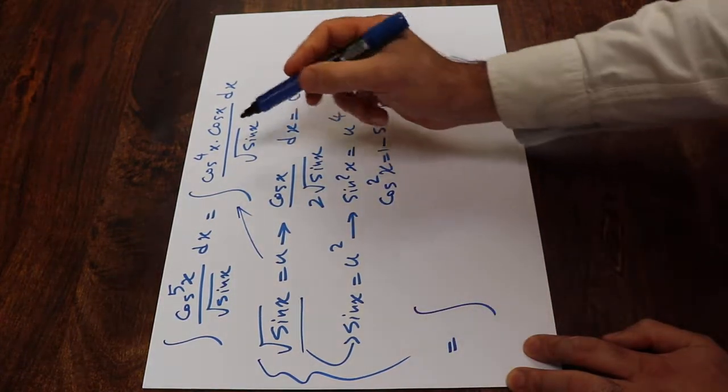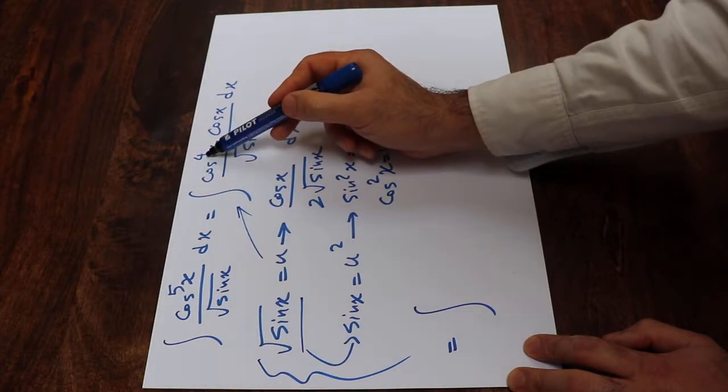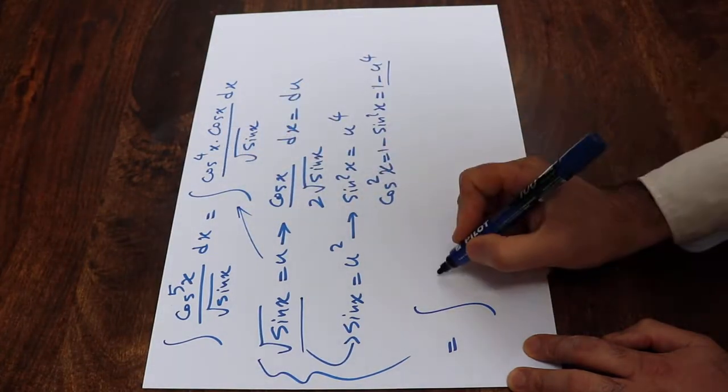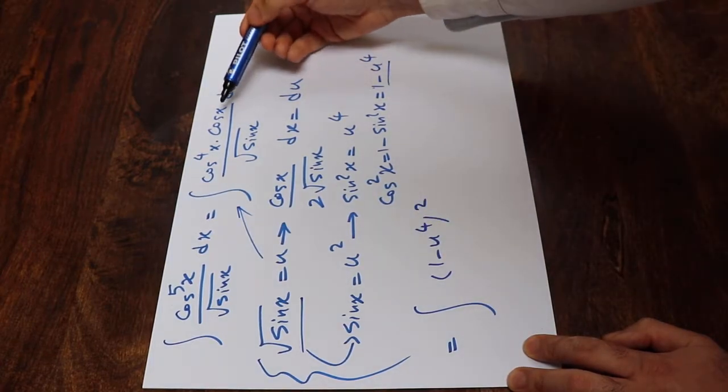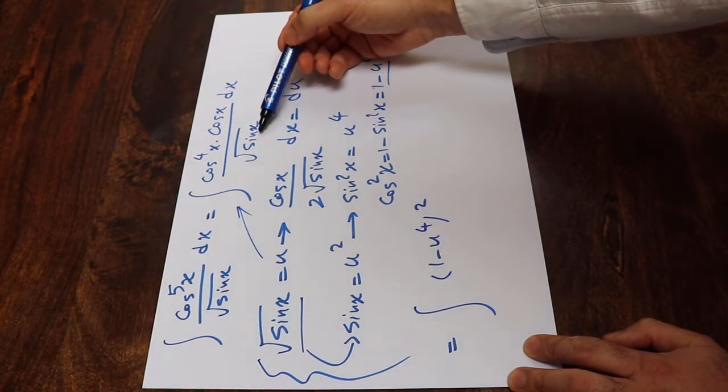that will be equal to integral of, instead of cosine 4x, cosine 2x squared I have. Cosine 4x will be basically 1 minus u to the 4th with the power of 2. Instead of cosine x divided by square root of sine x dx,